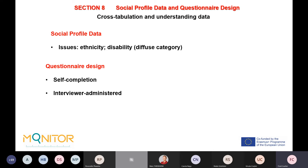Section Eight covers social profile data and questionnaire design, including cross-tabulation and understanding data. We outline a range of social profile data categories. Regarding ethnicity and disability, we leave these to each organization, as ethnicity can be culturally sensitive and disability data should be collected using official definitions in each country. The nature of disability is also too varied to standardize, and it may already be known through the recruitment process. Disability must still be taken into account in program design. The section also outlines self-completion and interview-administered questionnaire design.